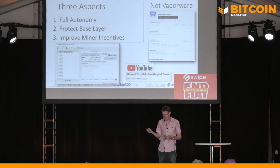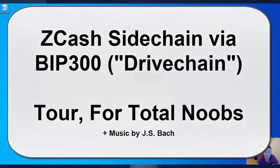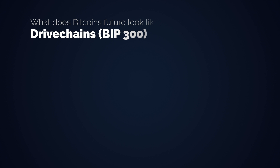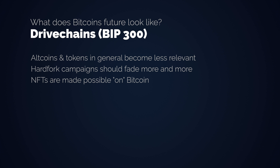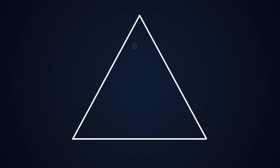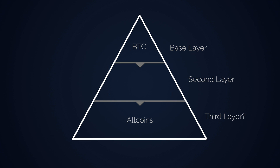The Drive Chain code is open source and working in a prototype way — it's not vaporware. In fact, the creator of BIP300, Paul Stork, did a YouTube video in which he replicated Zcash on a sidechain. Major benefits are that altcoins and tokens in general become less relevant, and hard fork campaigns should mostly fade. If you're into NFTs, these can easily be made possible with Drive Chains as well. They also make the idea of layered money possible — a concept Nick Bhatia described, stating that altcoins are part of the layered money hierarchy. You can check out the Drive Chain presentation from the Bitcoin 2021 conference, or check BIP300.info for a list of resources.